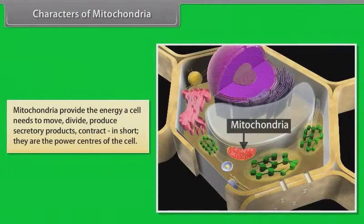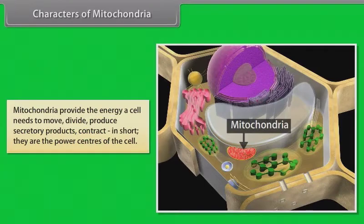Mitochondria provide the energy a cell needs to move, divide, produce secretory products, and contract. In short, they are the power centers of the cell.